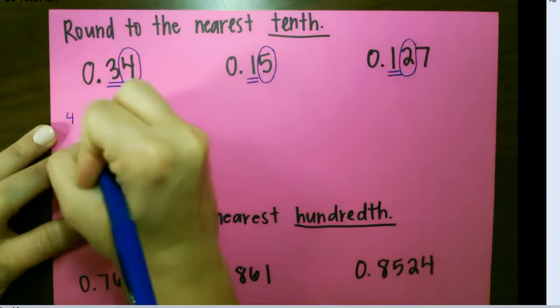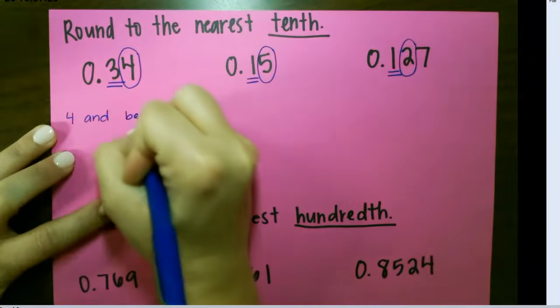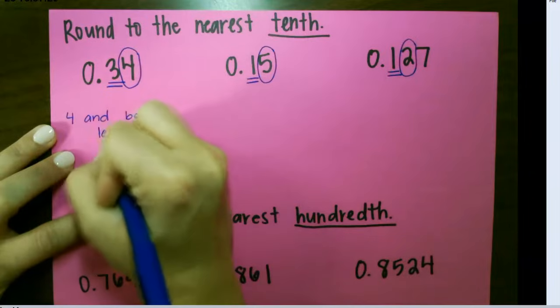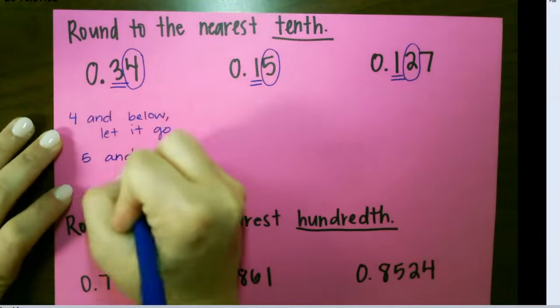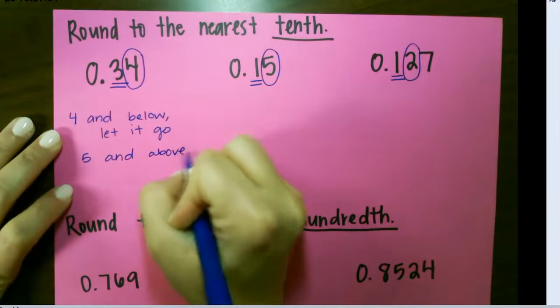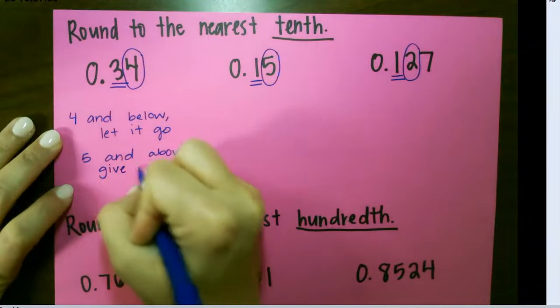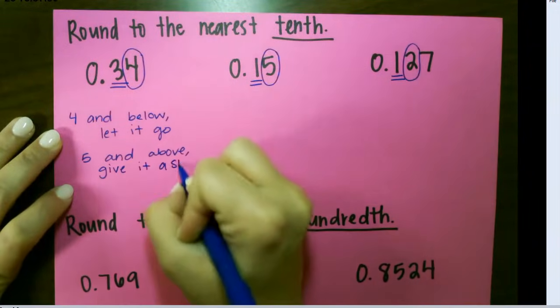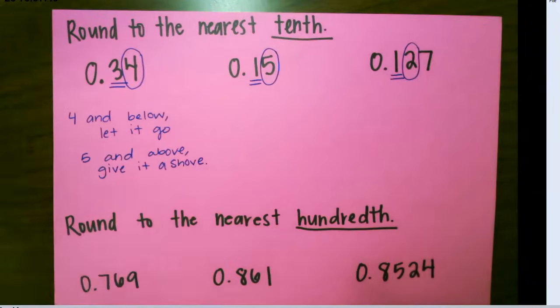So if it's four and below, you let it go. But if it's five and above, give it a shove. That's just a helpful phrase to remember what to do.